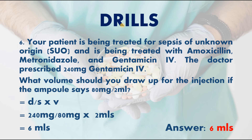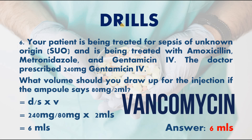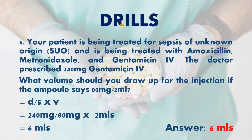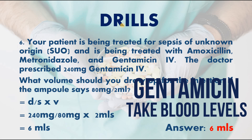For sepsis in the UK, broad-spectrum antibiotics — amoxicillin, metronidazole, and gentamicin — are started to cover possible sources of infection such as chest or urine infection. Gentamicin is often used as urine infection cover. If the patient is allergic to penicillin, vancomycin replaces amoxicillin. Because gentamicin is nephrotoxic, blood levels must be taken prior to giving the next dose.